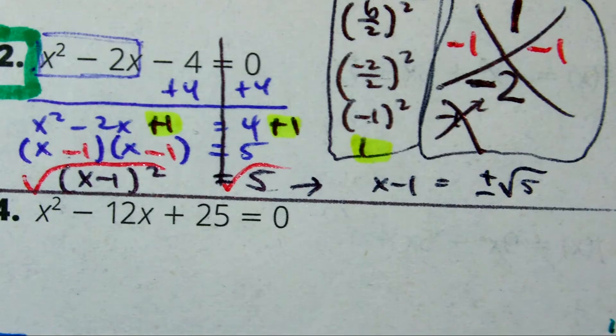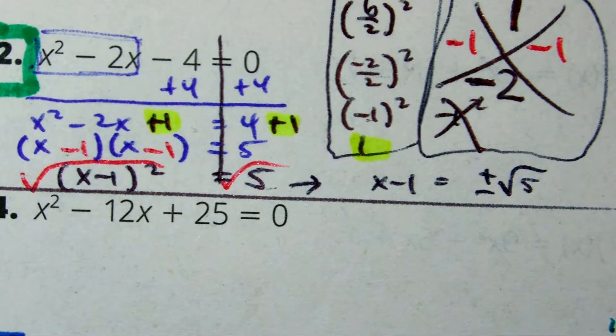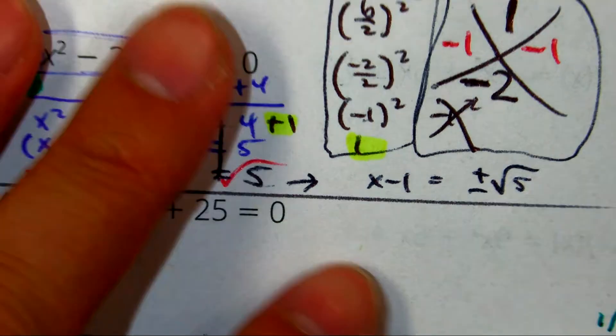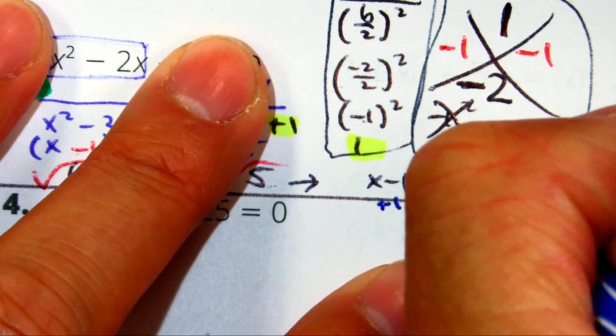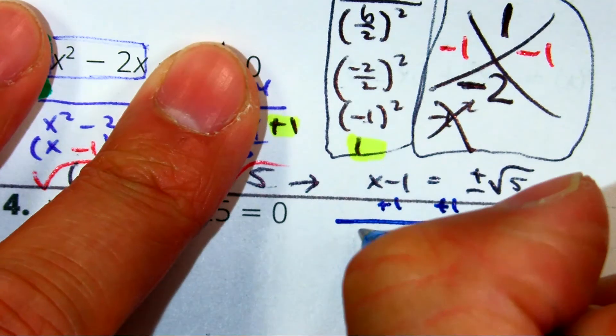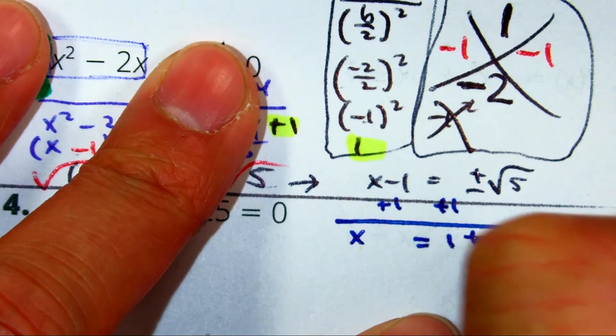Camille? x equals 1 plus or minus radical 5.